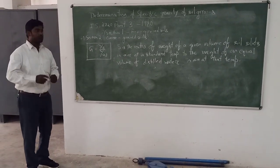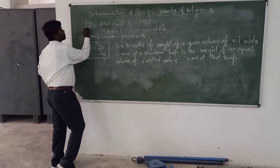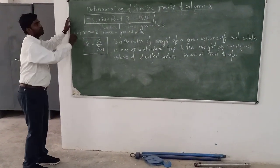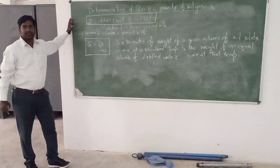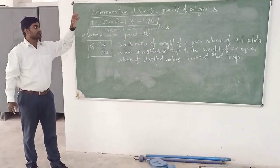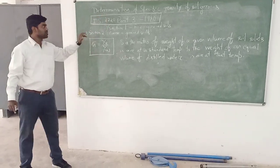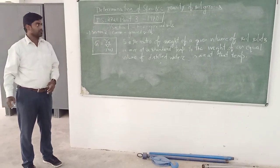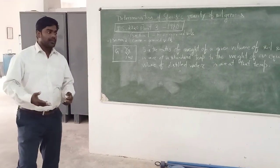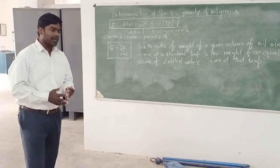This experiment we are going to perform in accordance with IS code 272 Part 3, which was published in the year 1980. It has two sections: section one is for fine dimensions and section two is for coarse-grained soils.